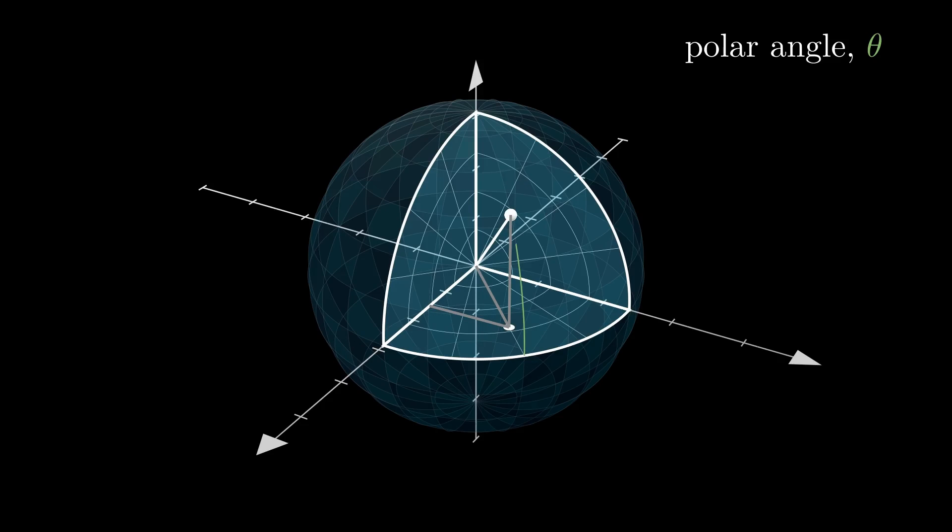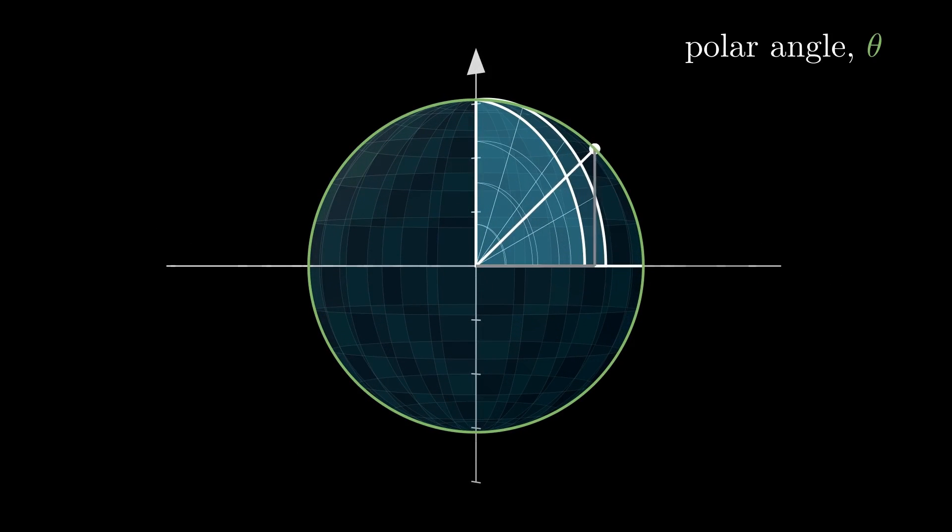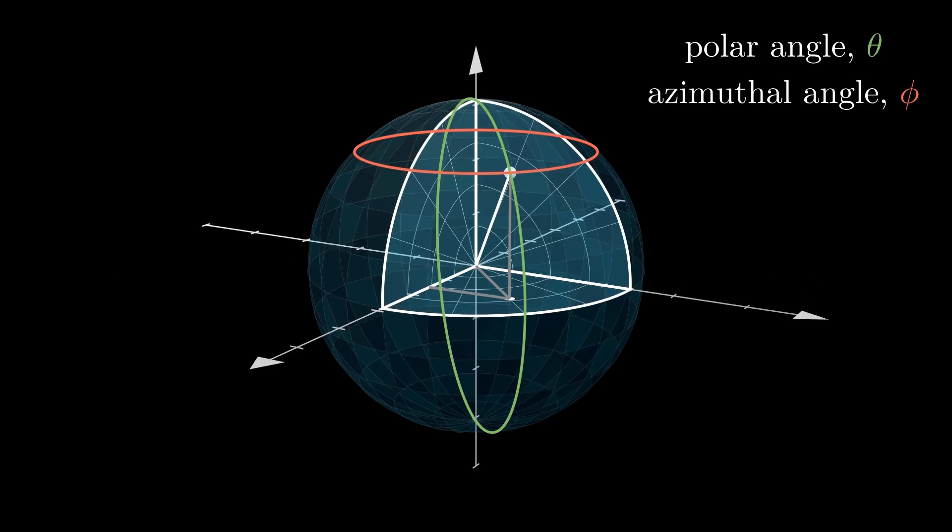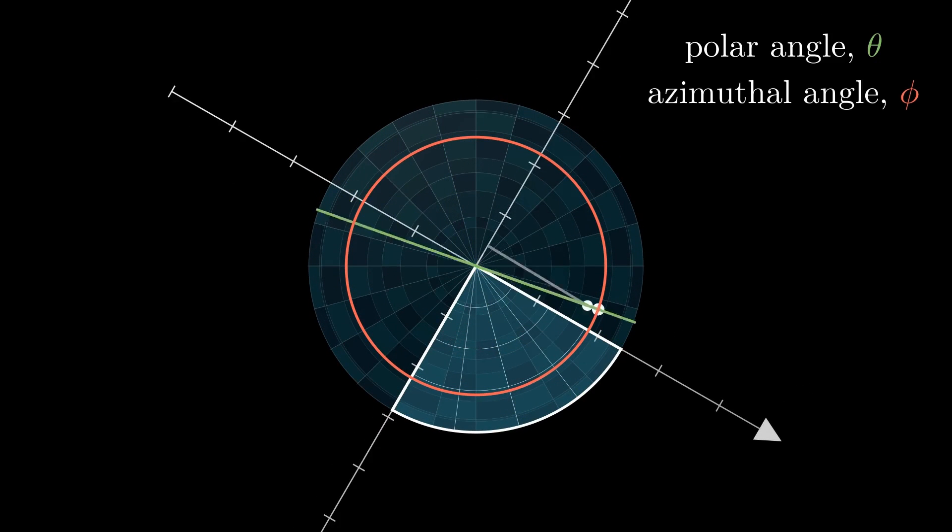The polar angle theta, which measures the angle between the radial line and the z-axis, and the azimuthal angle phi, which measures the angle between the x-axis and the radial line's projection on the xy plane.